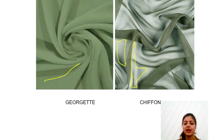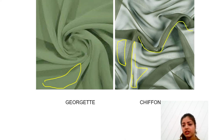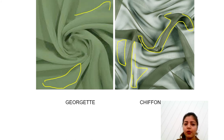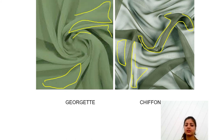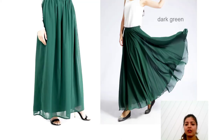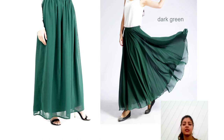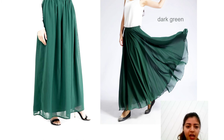Coming on to the fold area — if you see the texture of chiffon, it is very smooth. Georgette looks a little dull as well as rough. Keep this in mind. This is the skirt that we are going to illustrate. We are taking the same color, which will make it easy to observe the differences. You can see the fold area with darker shade — these are the folds occurring in georgette.